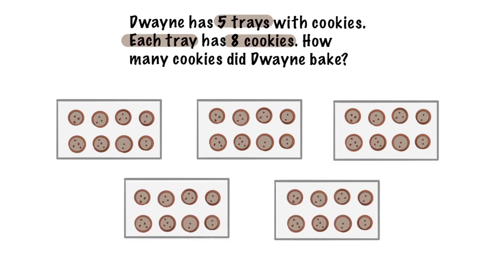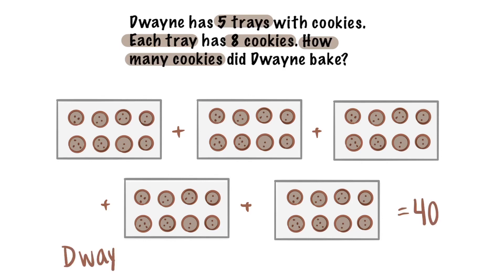How many cookies did Dwayne bake? We know our keyword is 'how many.' How many means we can either add or multiply. In this case, we can go ahead and use repeated addition. When we add eight plus eight plus eight plus eight plus eight five times, we get 40. Dwayne baked 40 cookies in all.